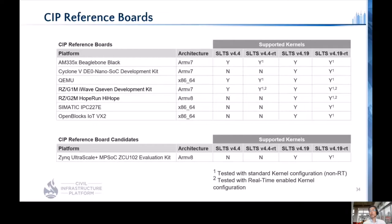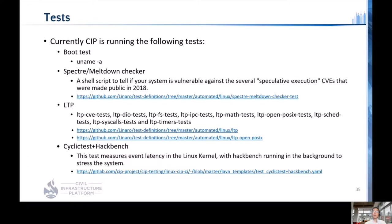Currently CIP has seven reference platforms plus a candidate reference platform, waiting for support to be backported before it becomes official. The reference platforms cover a range of architectures: ARMv7, ARMv8, and x86. Some boards are supported in both the SLTS 4.4 and 4.19 kernels, others only in 4.19. Some boards are also tested using CIP's real-time kernel. CIP currently runs four different test suites: a simple boot test, a Spectre/Meltdown checker, a large set of tests from the Linux Test Project, and real-time testing using cyclictest with hackbench background load.